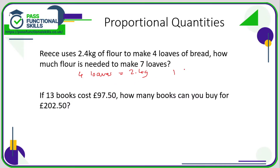One loaf is going to be 2.4 divided by four, because we're making four times less bread so we'll need four times less flour. 2.4 divided by four is 0.6, so we need 0.6 kilos per loaf. For seven loaves it's simply seven multiplied by 0.6, which comes to a total of 4.2 kilos.